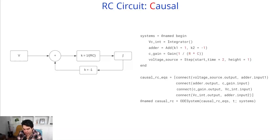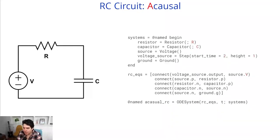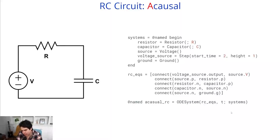Now I want to show what the acausal model looks like for the RC circuit. What we do here is we take a resistor, a capacitor, a voltage source, connect all these pieces together, and make sure we connect to ground. We just build our different pieces and build a hierarchical model by connecting together these components, and it will magically build the correct equations to be able to simulate. That's definitely a lot easier.